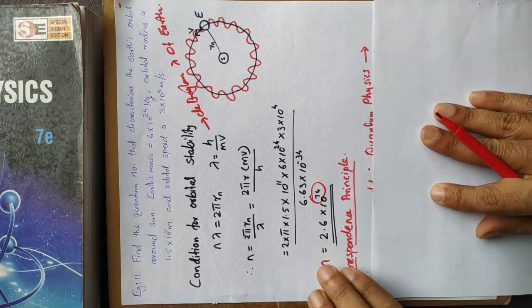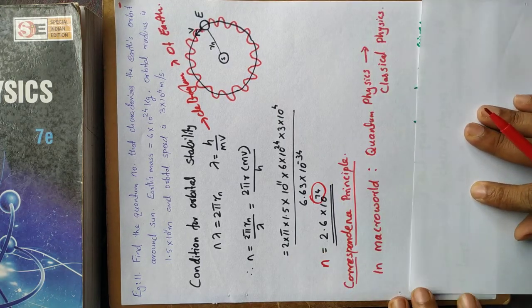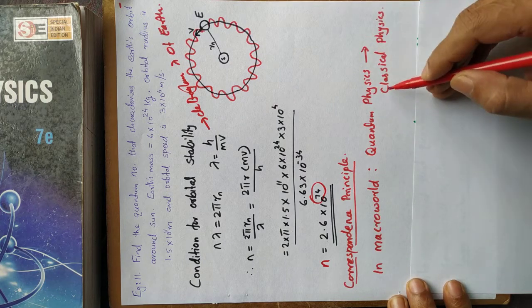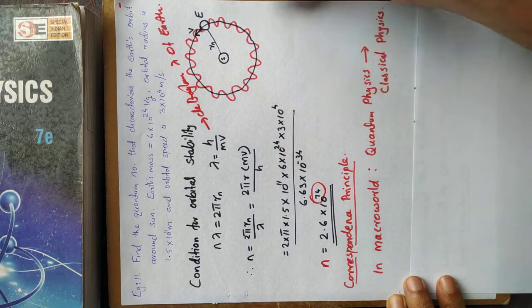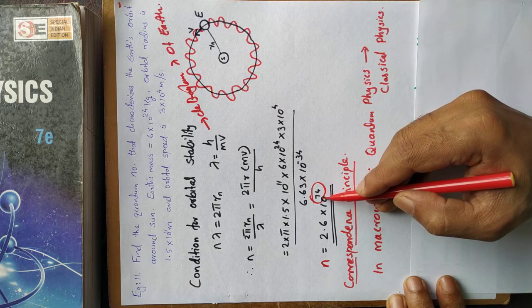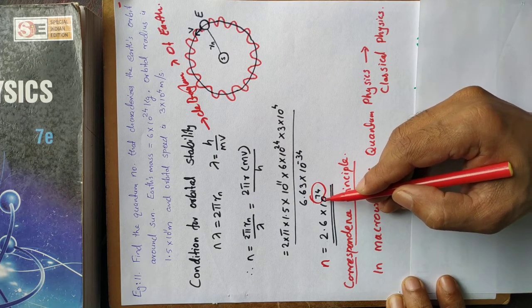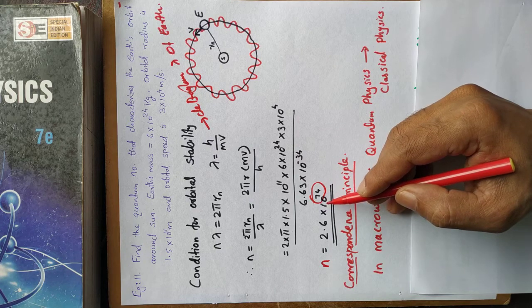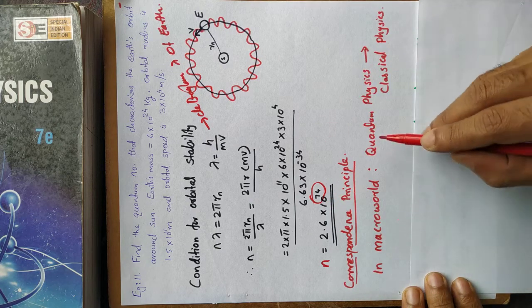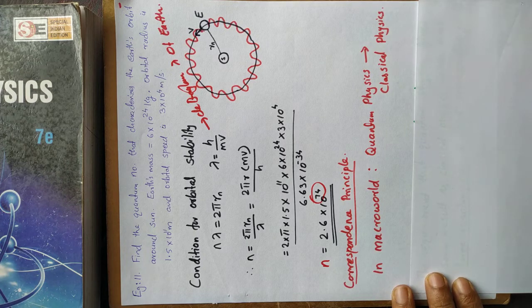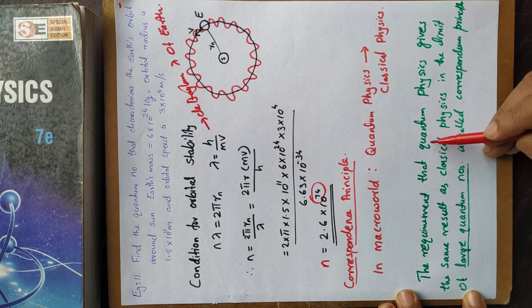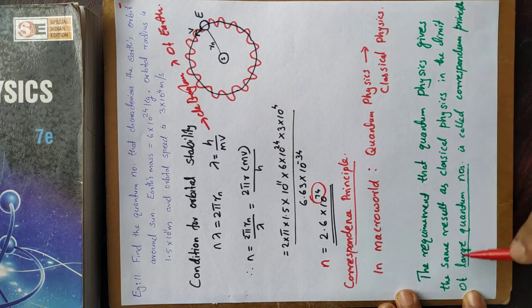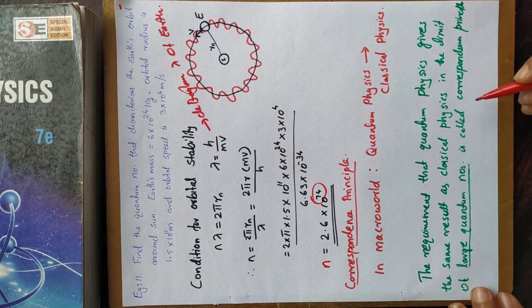The quantum physics should give the same result as classical physics. This principle is called the correspondence principle. In the limit of large quantum number — as n tends to a large value — quantum physics must give the same result as classical physics. This requirement is known as the correspondence principle.